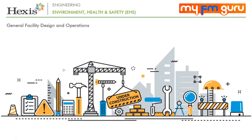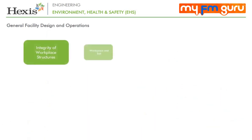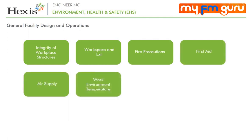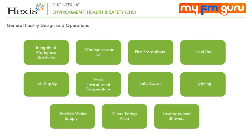The way a facility is designed for operations during its construction can have a major impact on the environmental, health and safety aspects to the occupants inside the building. Various general facility design and operations include integrity of workplace structures, workspace and exit, fire precautions, first aid, air supply, work environment temperature, safe access, lighting, portable water supply, clean eating area, and lavatories and showers.